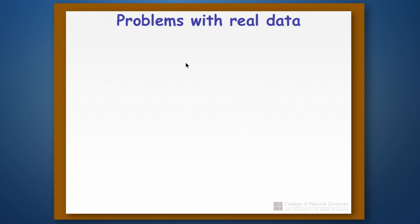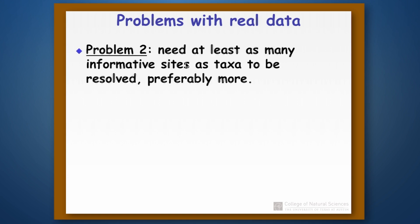Another problem is that you need at least as many informative sites as you do taxa in order to get a completely resolved tree — and usually it's better to have more. The idea is simply that you can only resolve relationships if there's a change along the branch leading up to that group. If there's no change on that branch, then everything collapses into what we call a polytomy.